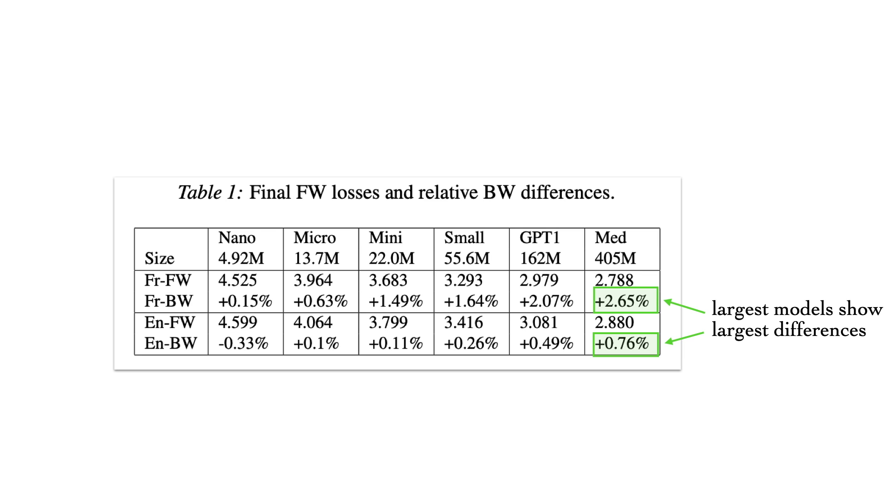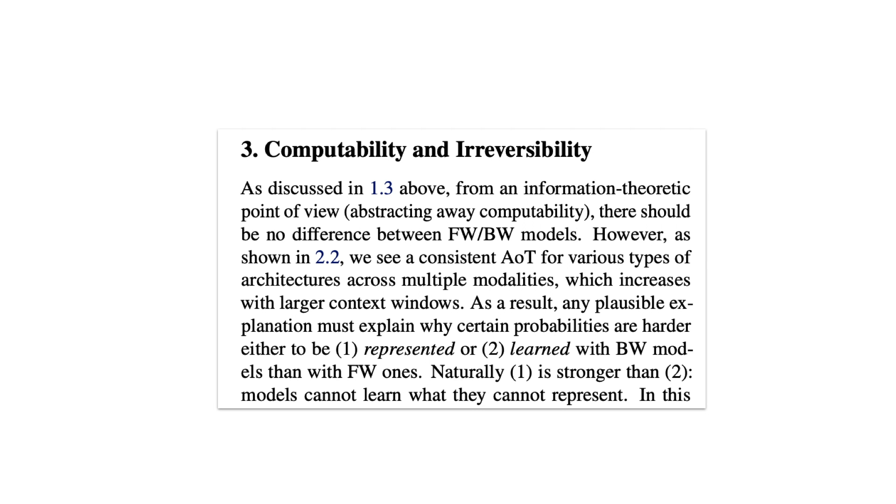So the obvious question is why? Why do backwards models get greater loss? Well, the authors categorize hypotheses under two possibilities. The backwards probability distributions are either more challenging to be 1. represented by the model or 2. learned by the model, where case 1 automatically implies case 2. If a model can't represent certain conditional distributions, then it obviously can't learn them.